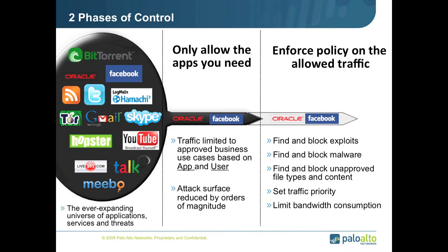First, we start with positive control, where we can limit what types of dangerous applications are allowed into the network in the first place. This first step is where we really want to limit the applications that get in to the ones that we need and actually have a purpose for.